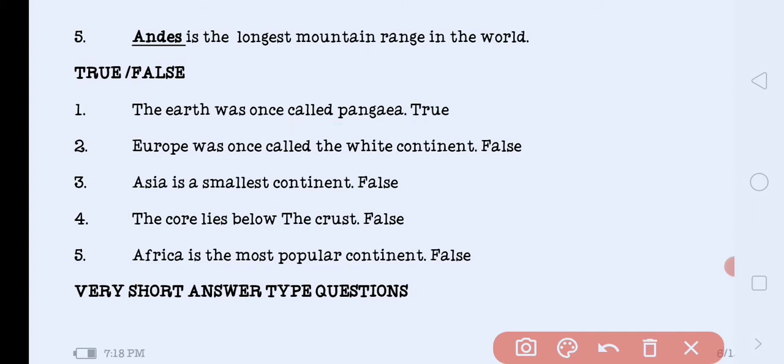Next. Europe was once called white continent. Was Europe called the white continent? Answer is false. White continent means where ice and snow remain frozen. Next is Asia, it is the smallest continent. Asia is the smallest continent. This statement is also false.